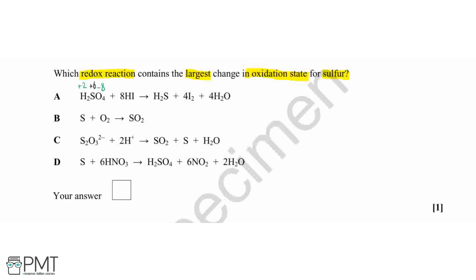And then on the right-hand side, with our sulfur-containing compound, we've got two lots of plus one from the hydrogen. Therefore, the sulfur will have to be in oxidation state minus two for this compound. So we're going from plus six to minus two — that is a change of minus eight.